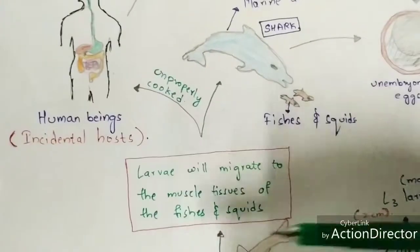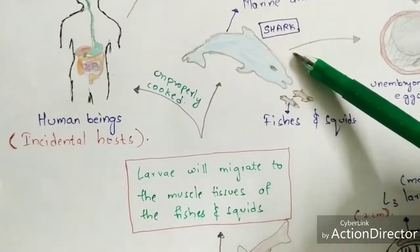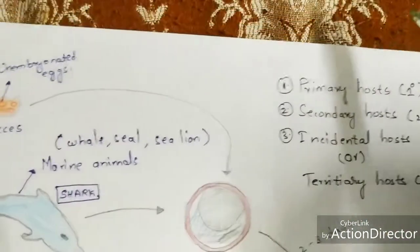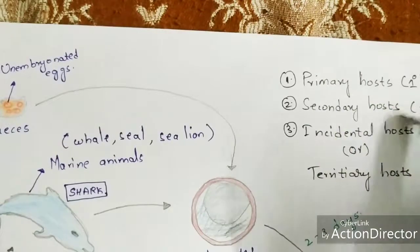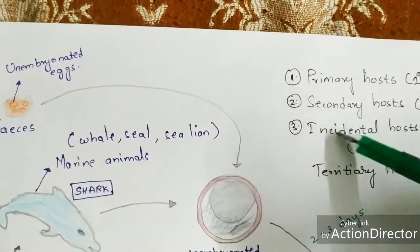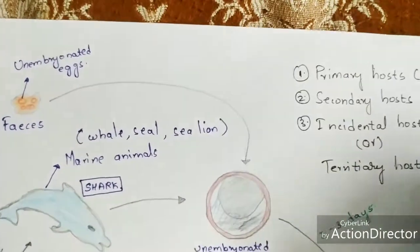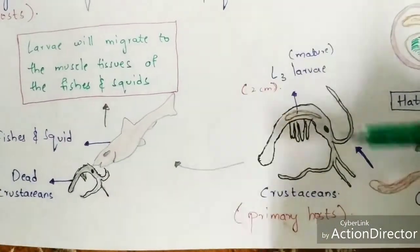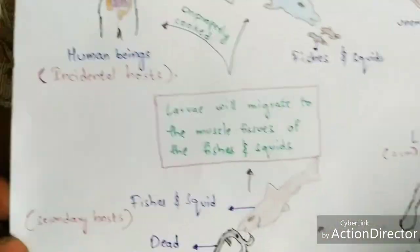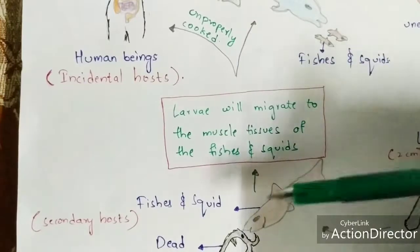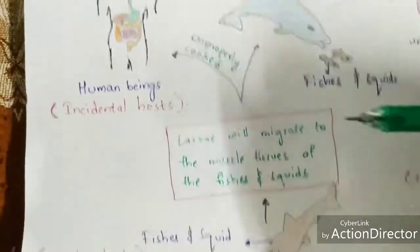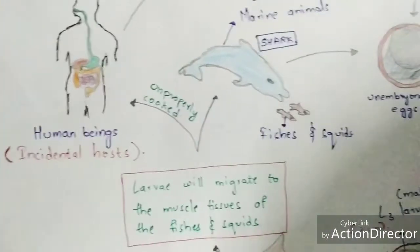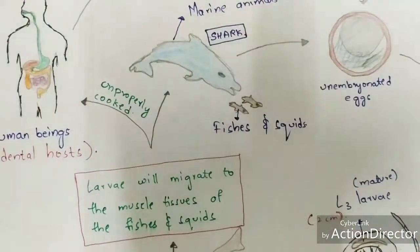Human beings and marine animals act as incidental hosts. To summarize the three host types: crustaceans are called primary hosts, fishes and squids are called secondary hosts, and human beings as well as marine animals are called incidental hosts - also referred to as tertiary hosts. In this way the total life cycle is completed.